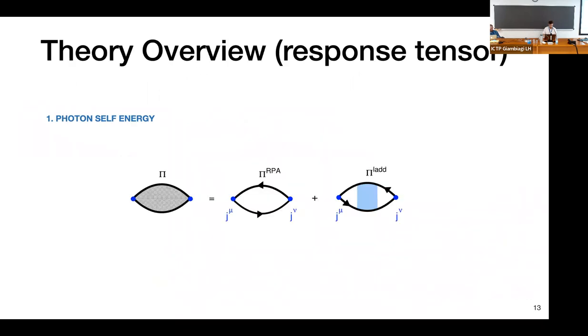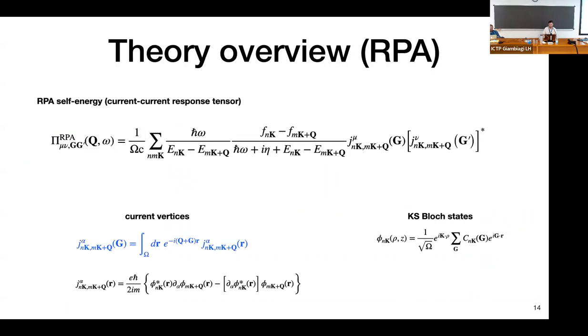The photon self-energy, we actually compute the two terms separately. The RPA is really well-known where you have the RPA self-energy with the occupation factors, damping constant and energy differences, and in the end you multiply it with current vertices which will be related to the electron current within your crystal. These current vertices will basically contain Kohn-Sham states and their derivatives.